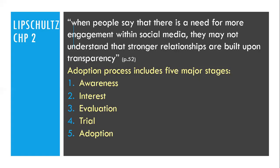When people say that there is a need for more engagement in social media, they may not understand that stronger relationships are built upon transparency. In your reflection, you should identify with various platforms what kind of adopter you are. If we want more transparency, here are five major stages: number one, awareness; two, interest; three, evaluation; four, trial; and five, adoption. You should have picked one of the five types of adoption — whether you are a laggard or an early adopter. The adoption process isn't necessarily only related to social media. In Malcolm Gladwell's book Outliers, he also explains something similar in theories related to business technology.